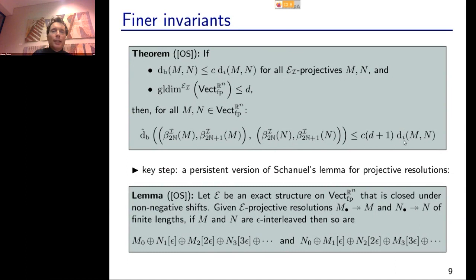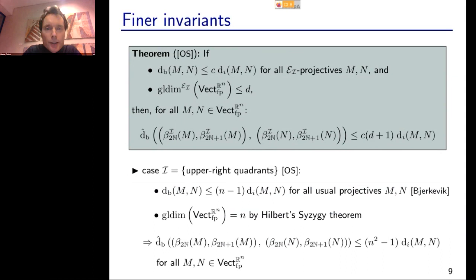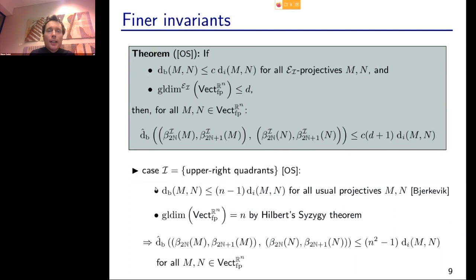The key argument connecting these hypotheses to the conclusion is a persistent version of Schanuel's lemma for projective resolutions. Schanuel's lemma says: given two projective resolutions M_dot → M and N_dot → N with M and N isomorphic, you can shuffle the terms — first term of the first resolution plus second term of the second, and so on — and the two newly formed modules are isomorphic. The persistent version says: if M and N are epsilon-interleaved rather than isomorphic, you can do the same process with shifts, and get an epsilon-interleaving between the newly formed modules.